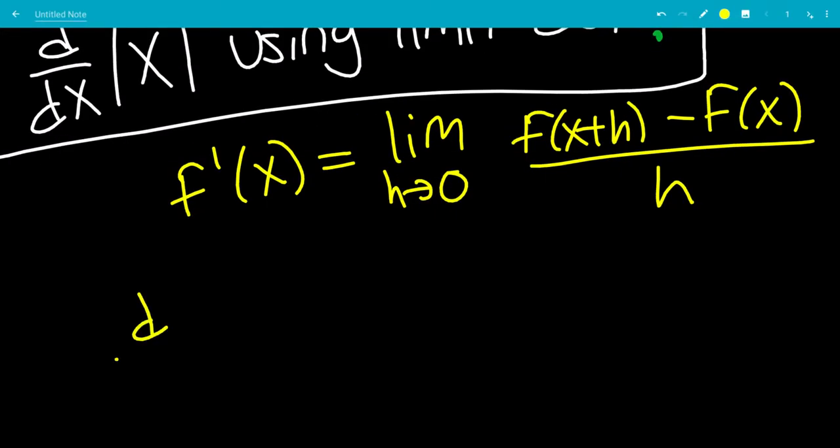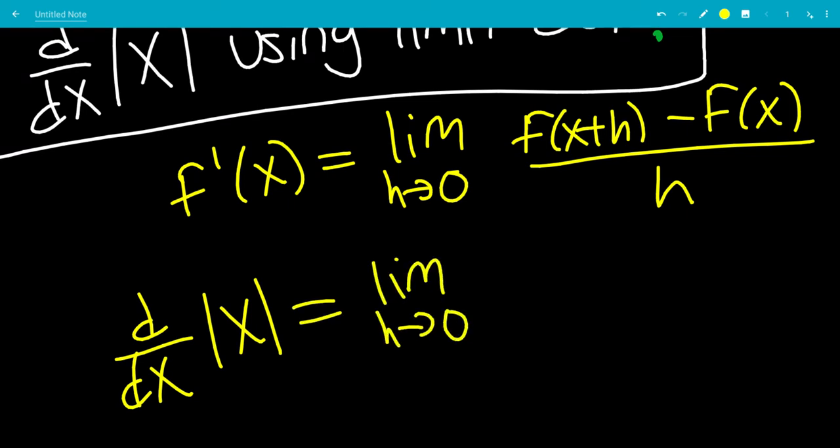So the derivative of absolute value of x - absolute value of x is the f of x function in this case. So let's plug in x plus h where x is. That would be the absolute value of x plus h minus the absolute value of x, which is the original function, all over h.